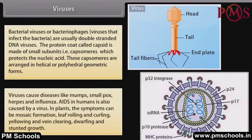Viruses cause diseases like mumps, smallpox, herpes and influenza. AIDS in humans is also caused by a virus. In plants, the symptoms can be mosaic formation, leaf rolling and curling, yellowing and vein clearing, and dwarfing and stunted growth.